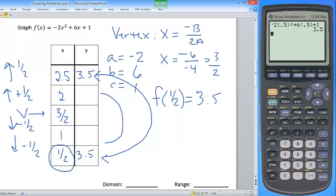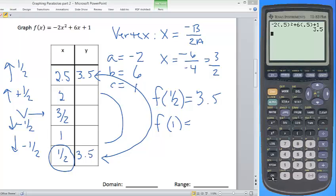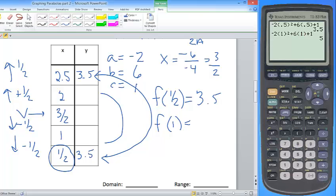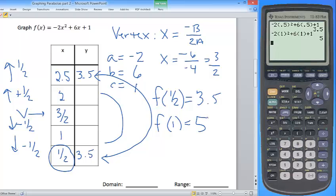So I'm going to do the same thing now with 1. I'm going to evaluate my function at 1, and I'm going to hit 2nd on my calculator and then enter, because that's going to bring back up the original entry that I just put in. And I'm going to replace every 0.5 or every x value, now this time with a 1. So -2 times 1² plus 6 times 1 plus 1 gives me 5.